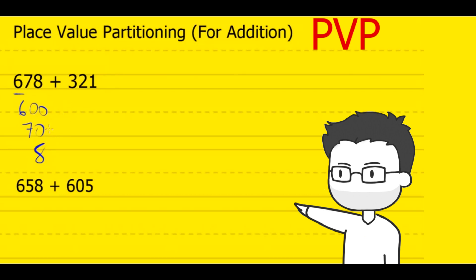Let's do that now. To break 321 into its place value parts, first we look at the 100's. We can see that the digit 3 is in the 100's column — that represents 300. Next, there is a 2 in the 10's column, and that represents 20. And there's a 1 in the 1's column, that is 1.